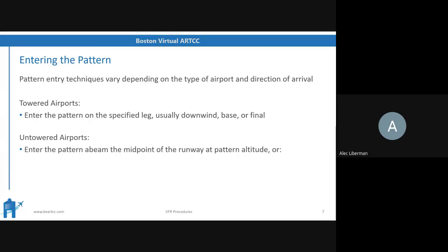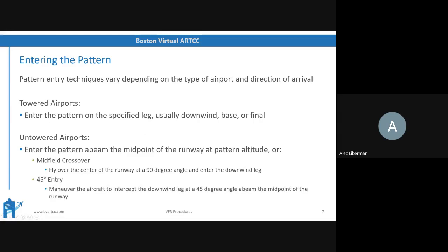At an untowered airport, you enter at pattern altitude at the midpoint of the runway — a midfield crossover — flying over the center of the runway at a 90-degree angle to enter the downwind leg if you're coming from the other side of the runway. Alternatively, use a 45-degree entry: maneuver the aircraft to intercept the downwind leg at a 45-degree angle abeam the midpoint of the runway. The 45-degree entry is arguably the most common for untowered airports because it provides the best visibility and the most standardized pattern with the least turning required.